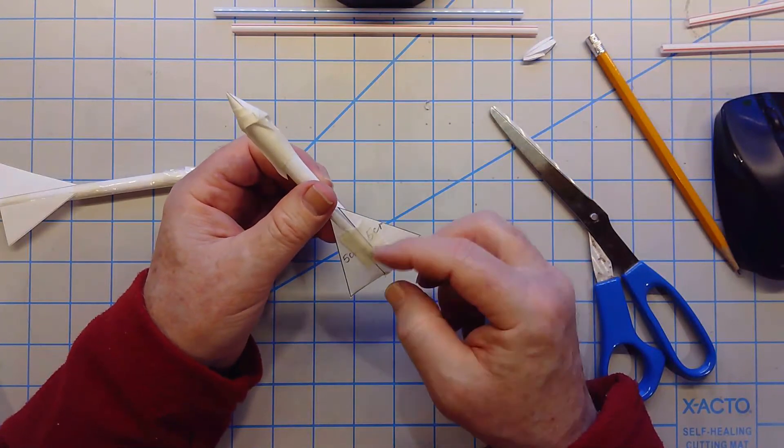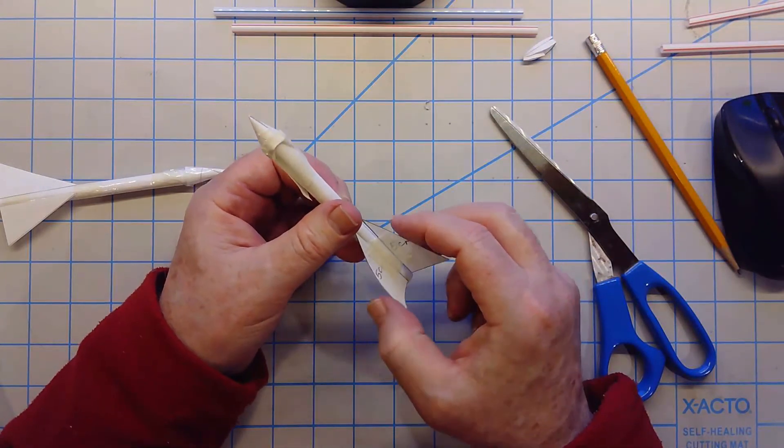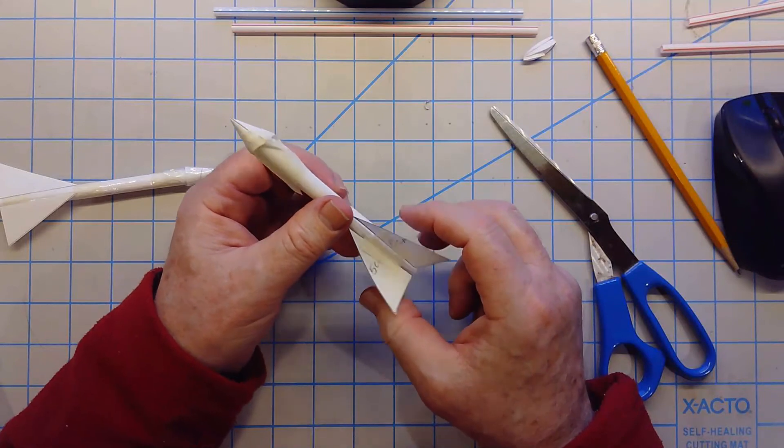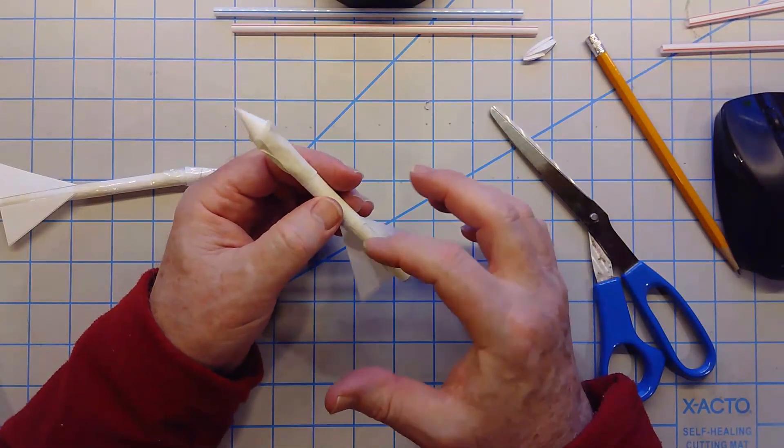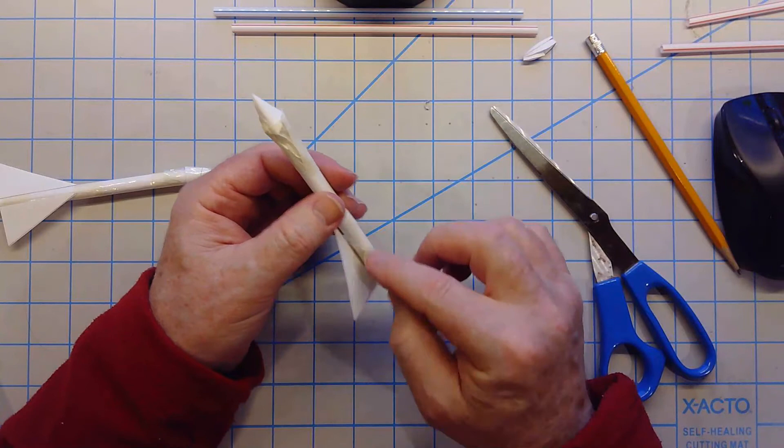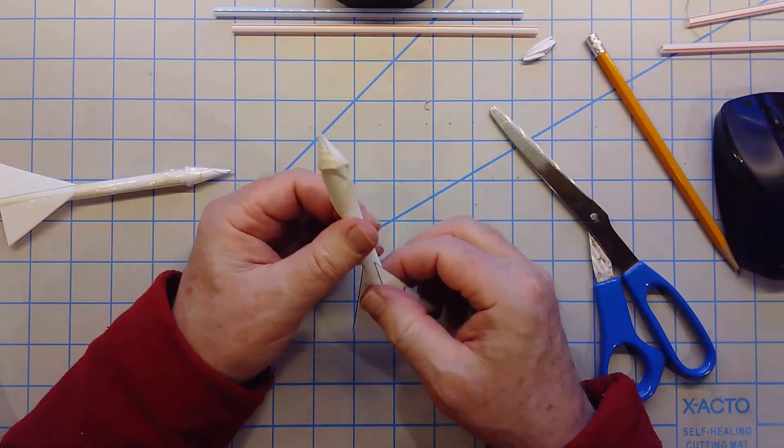Okay, and you can actually play around with how these bend, how the wings bend. If you want them to bend up you can actually make two more and put them on this side and this side too, so you have four fins on it. That's another option.